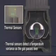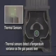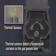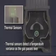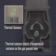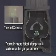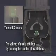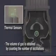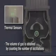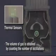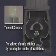Thermal sensors, located just after the nozzle, detect a temperature variance as the gas jet passes from one side to the other. The volume of gas passed through the meter is obtained by counting the number of oscillations detected by the sensors.